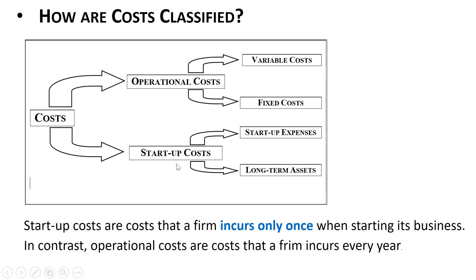Start-up costs are costs that a firm incurs only once when starting its business — buying equipment, doing legal paperwork. These are one-time-only costs at the beginning. In contrast, operational costs are costs that a firm incurs every year after operations have begun — like rent paid every year or material costs every year. The key question is: is this a one-time start-up cost, or will it repeat every year during operations?